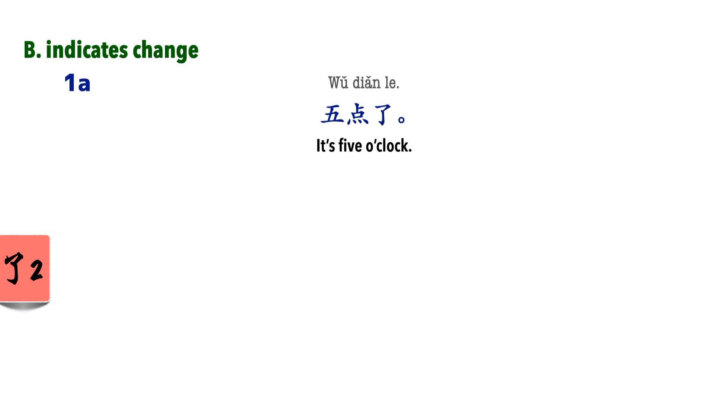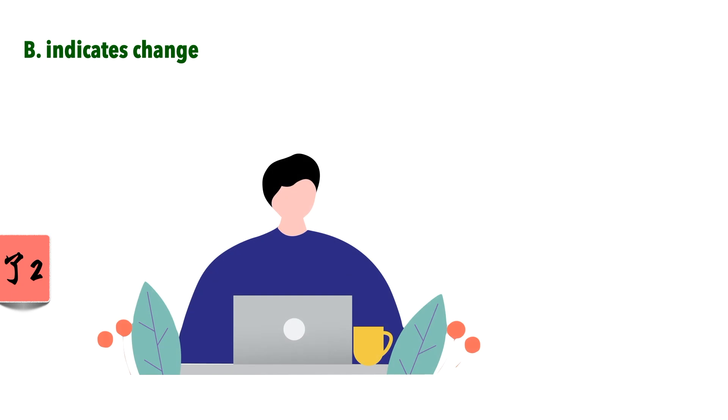五点了. 现在五点. They both basically mean the same thing. But, we would probably say them under different circumstances. Say, you're busy working at the computer, and then happen to take a glance at the clock. And suddenly, you realize the time. Oh, it's five o'clock! In this case, you would say 五点了.